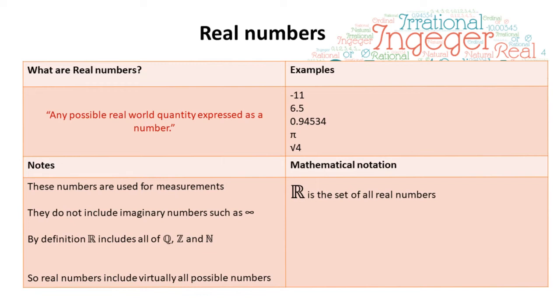Next, we have real numbers. Now, this is a very broad category, and it consists of any possible real-world quantity expressed as a number. So we've got some random examples here: minus 11, a number with a fractional point, pi, square root of 4. And these numbers are used for measurements.